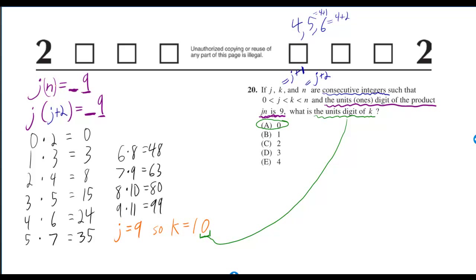So if n is equal to j plus 2, we can replace it and put j plus 2 instead of n. So we've got j times j plus 2 is equal to blank space 9.